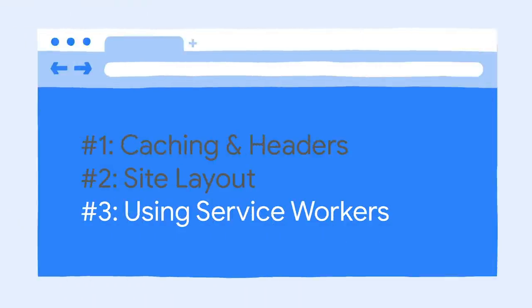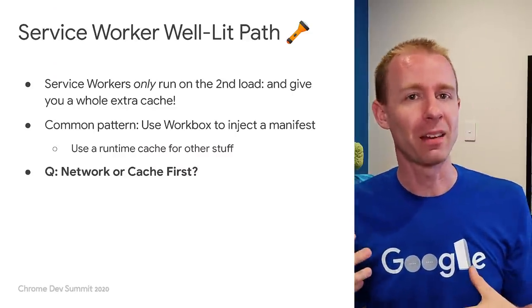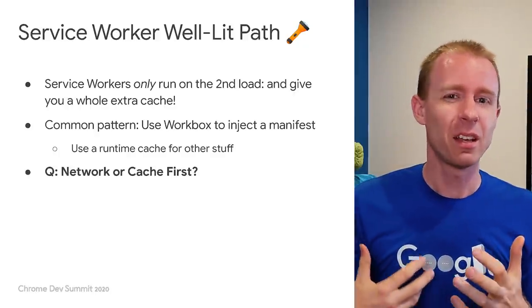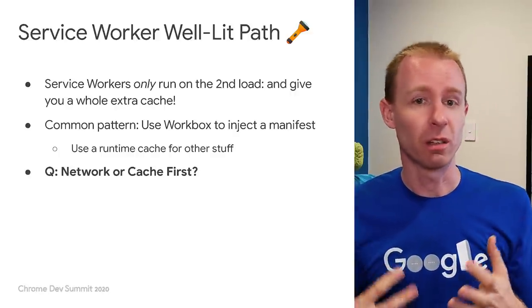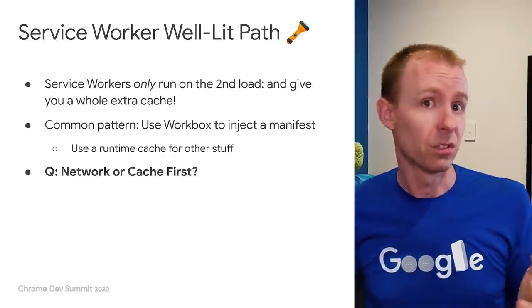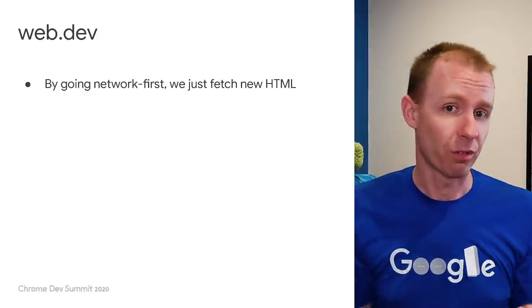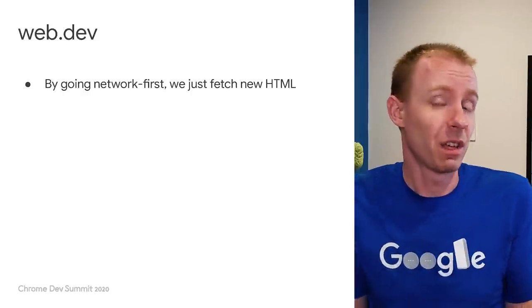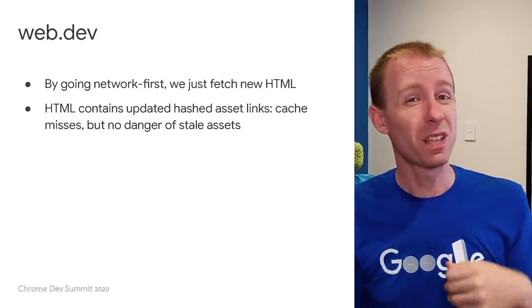Finally, a talk from Google isn't complete without a section on service workers, which fundamentally only run on the second load — so we very much care about them for this talk. They give you a whole extra cache you can do what you like with. A common pattern is to use Workbox to inject a file manifest of everything core you need to run the site, and then a runtime cache for everything else. The big question when building a service worker is: are you going network first or cache first? Cache first is great for apps and tools. In web.dev's case, especially after our hiccup at the start of the talk, we decided to go network first — every time we go to the network, we get a new HTML file and we're confident our second load works properly.